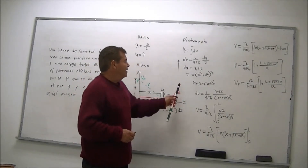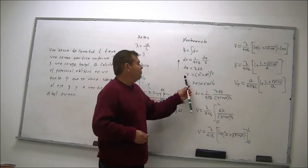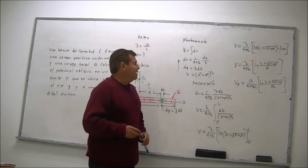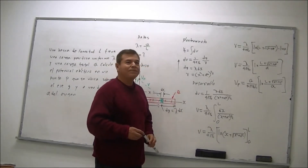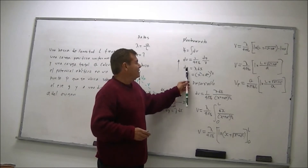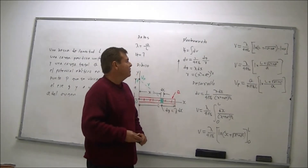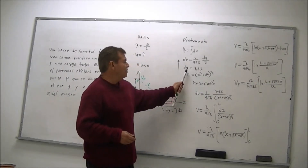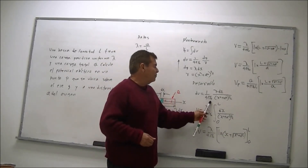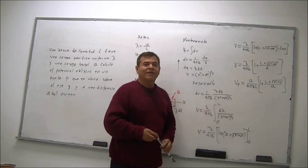Desarrollo. Recorremos en sentido contrario el planteamiento. Primero encontramos que R es igual a (X² + A²)^(1/2). Seguimos con diferencial de Q, que es lambda diferencial de X. Ahora llegamos a dV; ahí sustituimos estos valores. Entonces, dV va a ser 1 sobre 4πε₀ por lambda dX sobre el radio, que es (X² + A²)^(1/2).